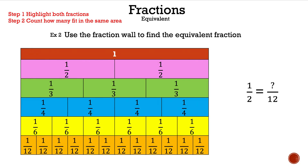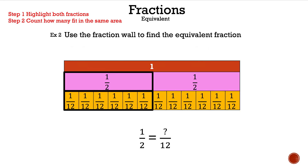Take a look at the next question: use the fraction wall to find the equivalent fraction. We're going to be dealing with one half is equal to something over twelve. Let's go ahead and highlight both of those fractions, and now count how many twelves are in one half: one, two, three, four, five, and six. So one half is equal to six over twelve.